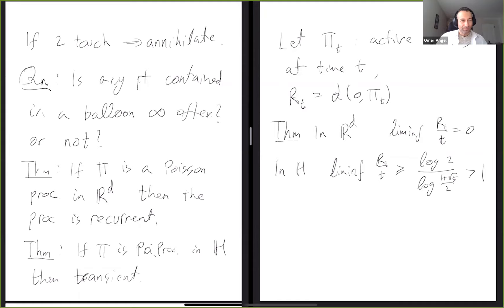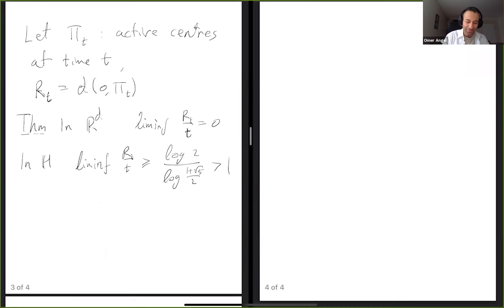The consequence is that not only is the origin eventually not contained in any balloon, but in the Poincaré disk model the balloons do not get within a certain distance from the origin — they go very close to the boundary asymptotically. I will also talk about other spaces a bit later.